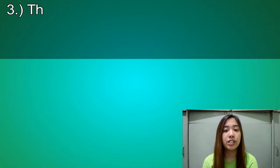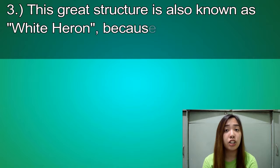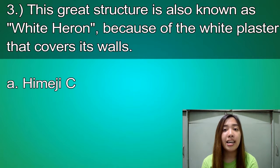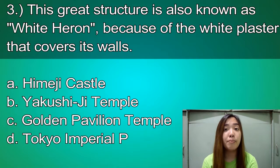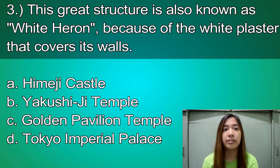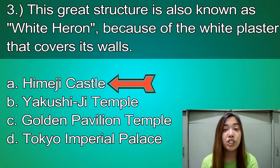Next question. This great structure is also known as White Heron because of the white plaster that covers its walls. The choices are: A. Himeji Castle, B. Yakushiji Temple, C. Golden Pavilion Temple, or D. Tokyo Imperial Palace. You have five seconds to answer. Time's up. The correct answer is A. Himeji Castle.